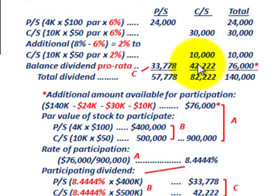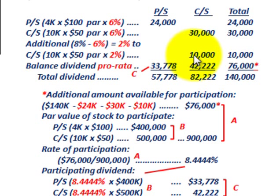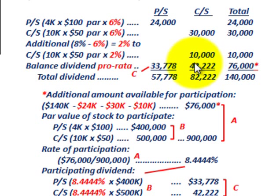That takes care of our example where we had to allocate dividends for preferred stock that was both non-cumulative and partially participating. The key is to determine the remaining balance on a pro-rata basis to determine total stock allocations between preferred and common stock.